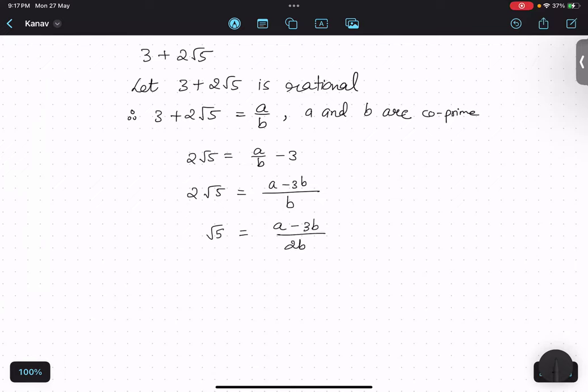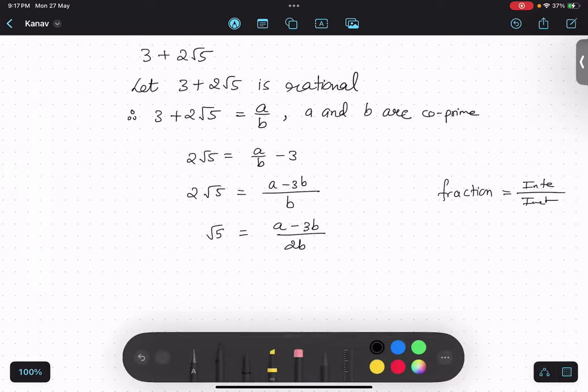Now try to understand. What is a fraction or rational number? Where we have some integers on the top and integers at the bottom. Now look at this side. a is an integer. That's why we were talking about coprime numbers. 3 is an integer, b is an integer, 2 and b are integers. So basically it's a fraction, it's a rational number.